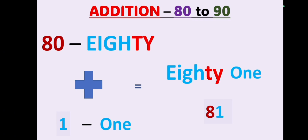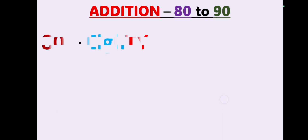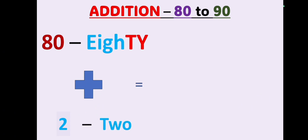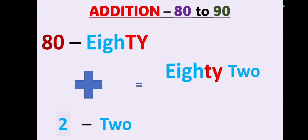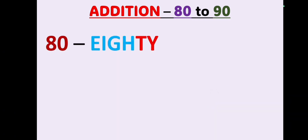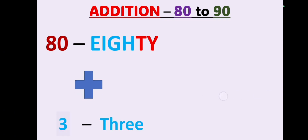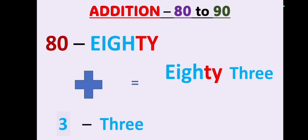Similarly, 80 plus 2: write down 80 as it is, then the number 2, which gives you 82. Let's see the next: 80 plus 3 equals — write down 80 as it is again, since any number added with zero gives the same result. Zero plus 3 equals 3, so write down the number 3, and it gives you the result 83.